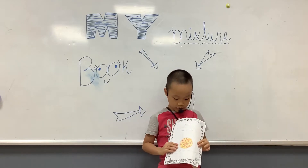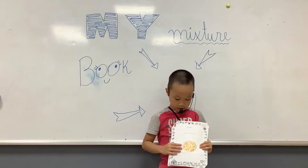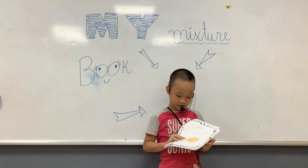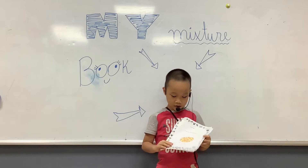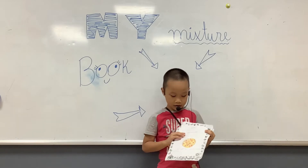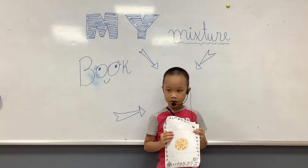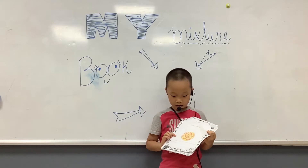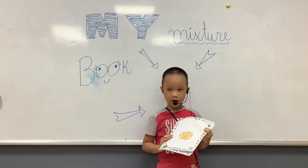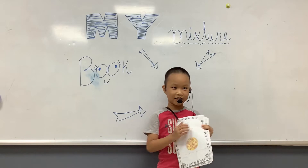Mixture 1 is the pizza. It's a solid. We need flour, tomatoes, sausages, hot water and peas.